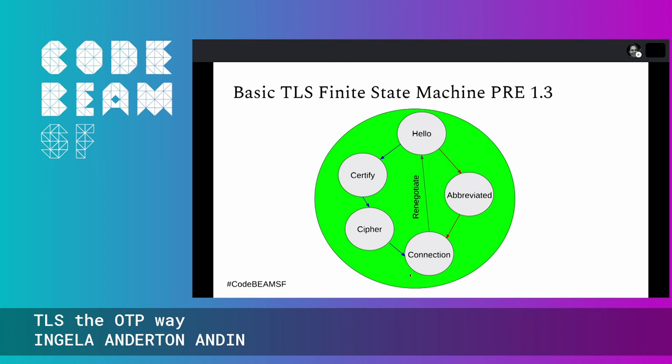Going through the red path instead, we do a so-called abbreviated handshake rather than a full handshake. This abbreviated handshake skips most of the negotiation because it has saved parameters that can be reused on both client and server sides. Also, when in the connection state, you can start to renegotiate — that is, start a new handshake to, for instance, refresh session keys.